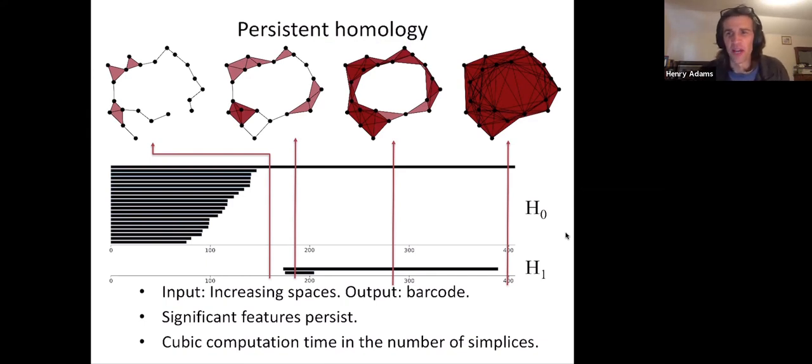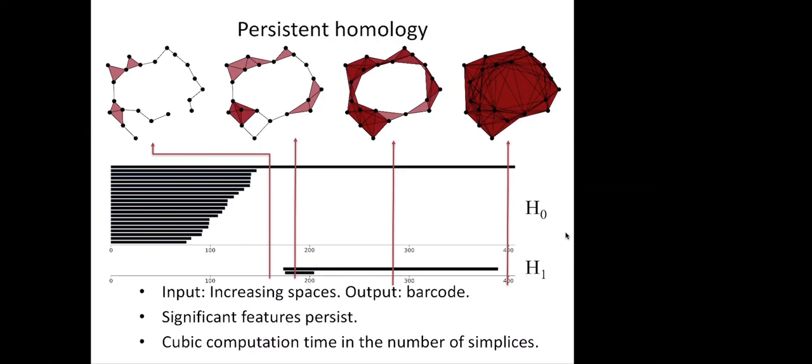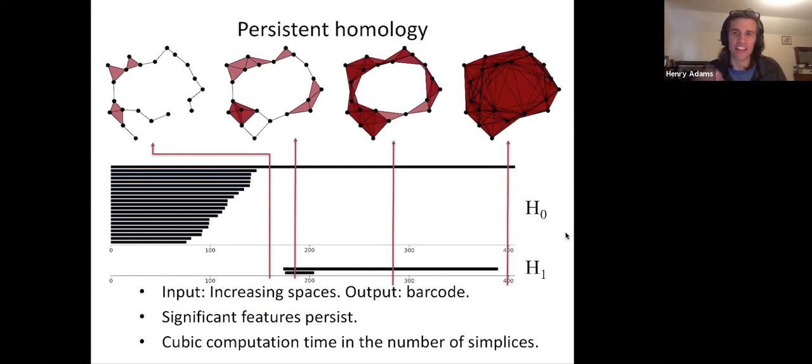So those are the matrices that encode the structure of these spaces that we've built. And then you're able to do linear algebra on those matrices to recover this homology information. What do you think? Does that make you happy? Mad? It makes sense, I think. There's more we could chat about here, maybe in this class or outside of class.